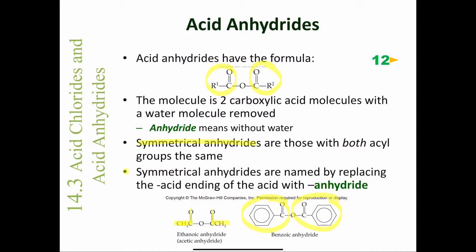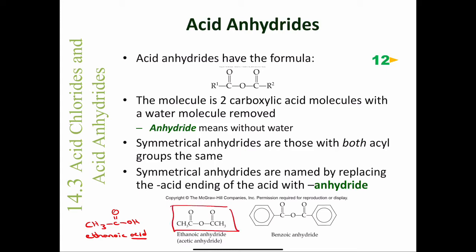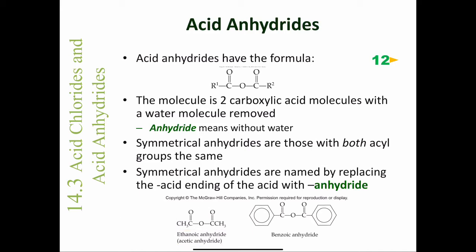Symmetrical anhydrides are named by replacing the word 'acid' in the acid name with 'anhydride.' For example, ethanoic acid becomes ethanoic anhydride. The common name acetic acid becomes acetic anhydride. Similarly, benzoic anhydride is derived from two molecules of benzoic acid.